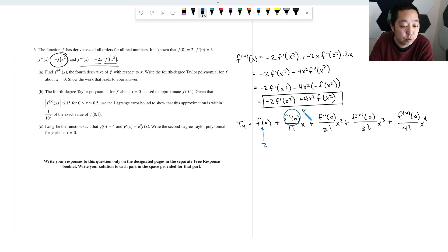We know f'(0) is 3. f''(0) is just -f(0)². Let's write that out. f''(0) is -f(0)², which is just -f(0), which is f(0) is 2, so it's -2. So this guy here is -2.